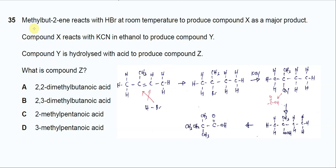Question 35. Methylbutyene reacts with HBr at room temperature to produce compound X as a major product.